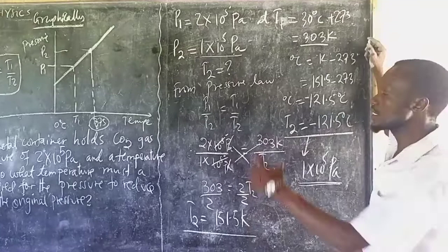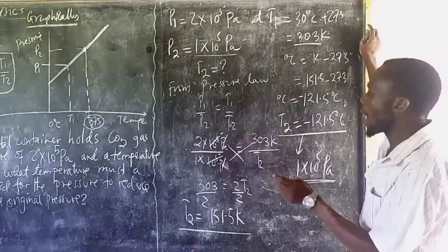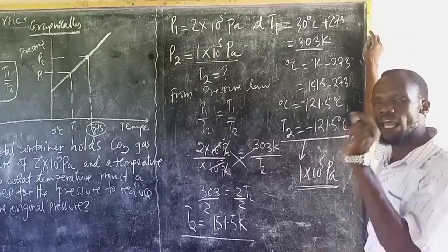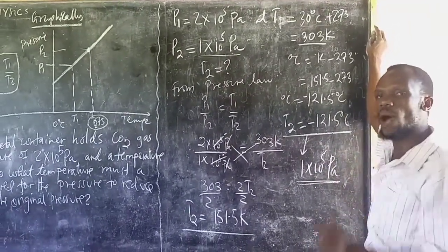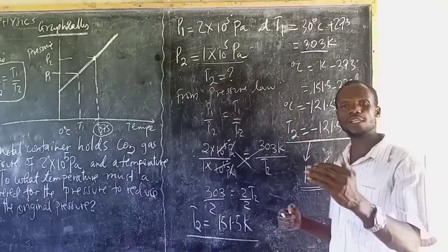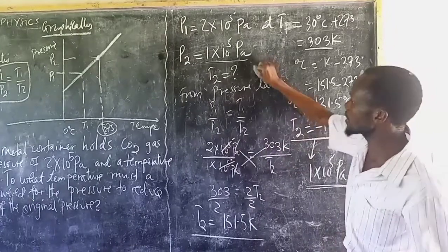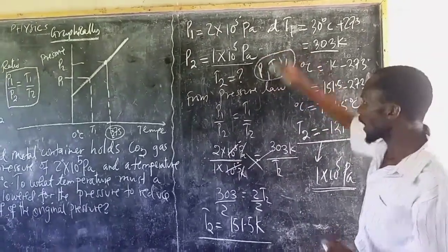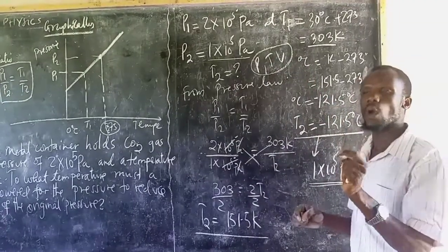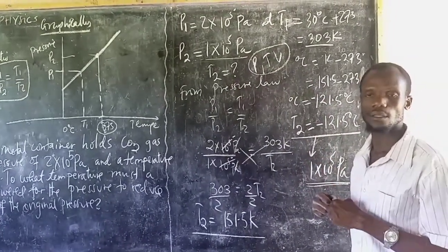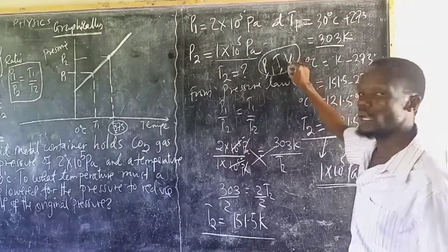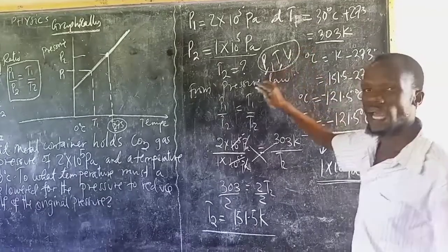This is all about the pressure law — pressure law is about pressure and temperature. Charles' law is about temperature and volume. There is a difference for every law: when discussing pressure, temperature, and volume, one factor is held constant while the other two vary. Pressure and temperature is the pressure law; temperature and volume is Charles' law; and pressure and volume is Boyle's law.